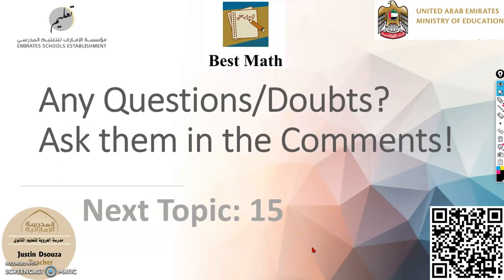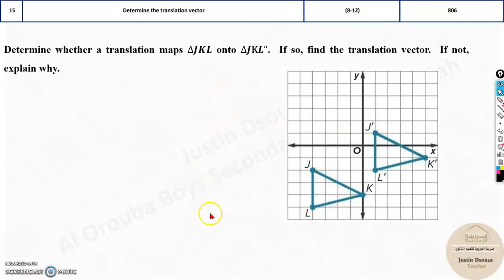The next topic is the 15th topic. It is about translation. Translation is one of the easiest of all lessons among reflection, symmetry, rotations. Translation is very easy.